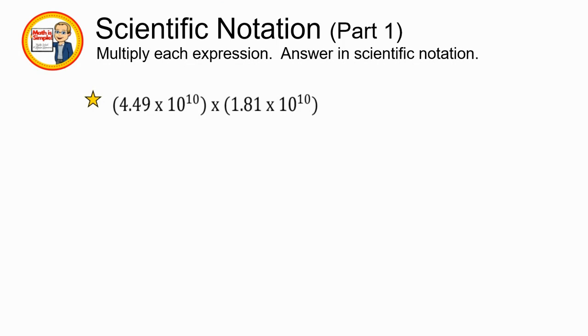In our first problem, we have 4.49 times 10 to the 10th times 1.81 times 10 to the 10th. We talked about in the previous video about our bow tie method, where we are going to take our constant and multiply those together, and then we are going to multiply our exponents together. So with that being said, let's go ahead and start with the very first one.